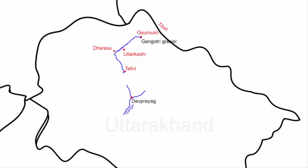At Tehri, the Bhagirathi river is held by the Tehri Dam — it is the highest dam in India and basically a hydroelectric power plant. The river continues to flow southeast and reaches the town of Devprayag, where it joins the river Alakananda.